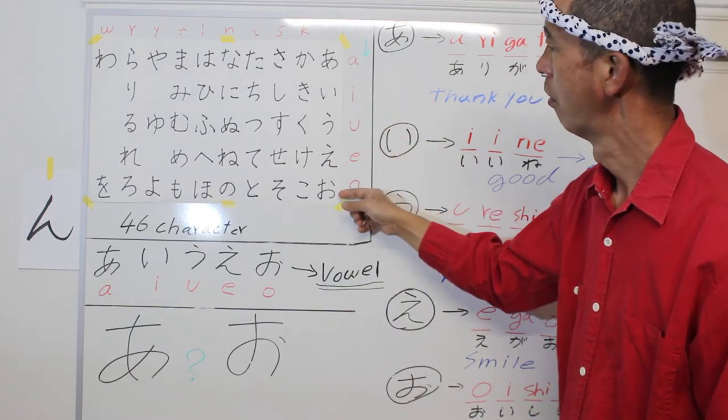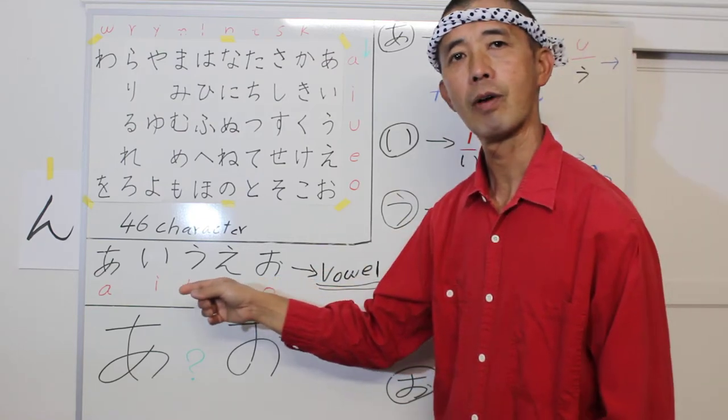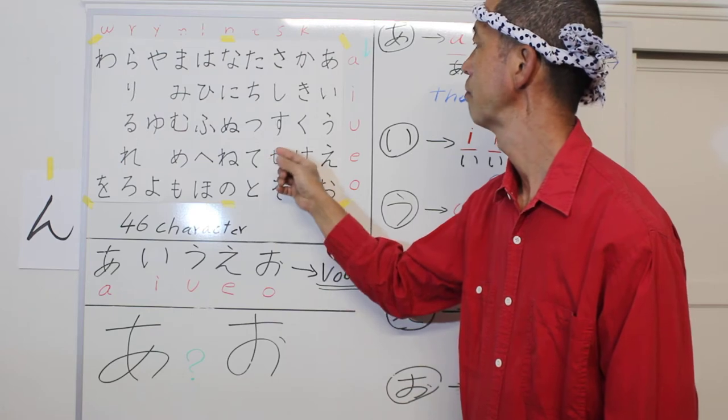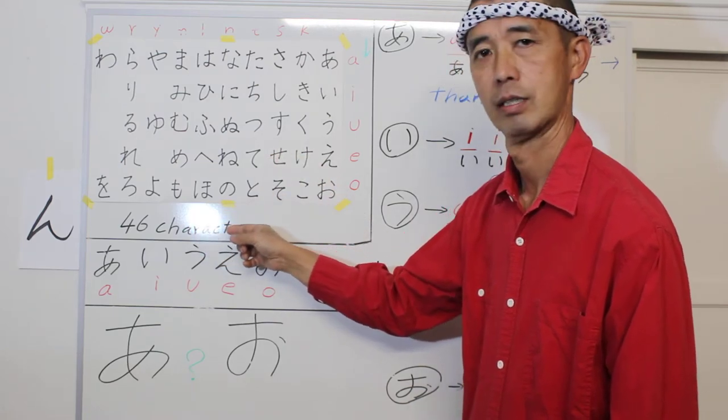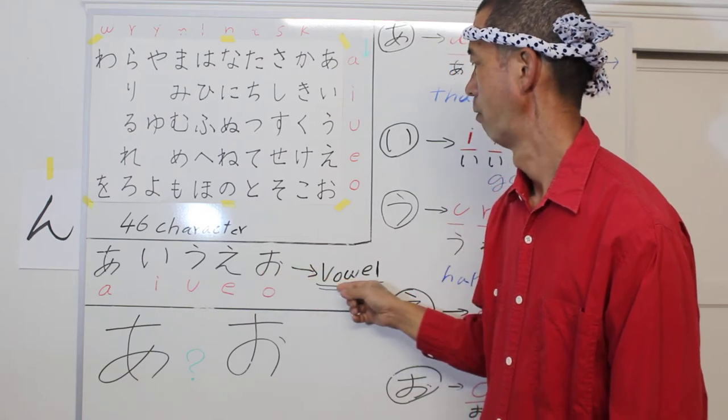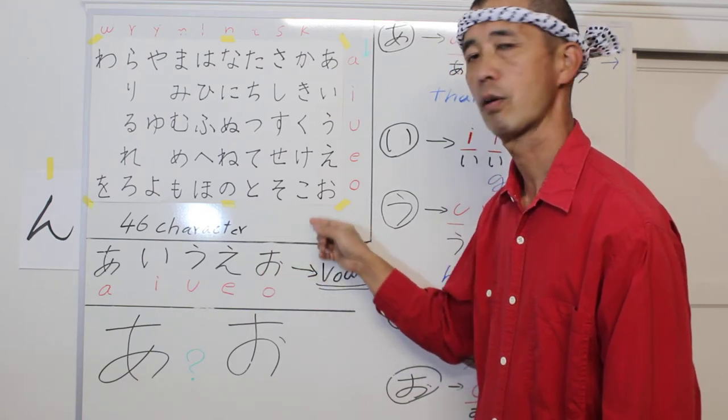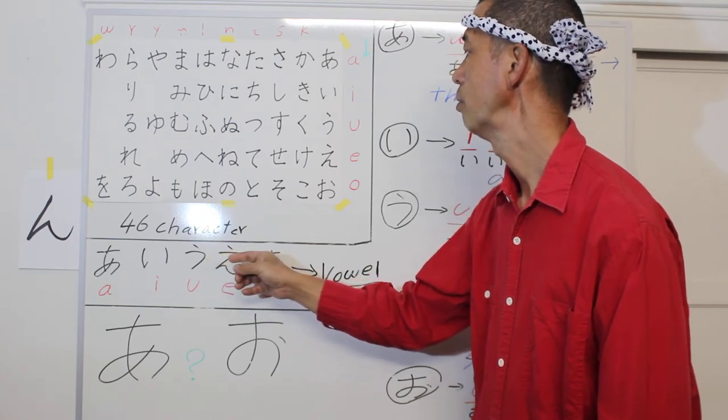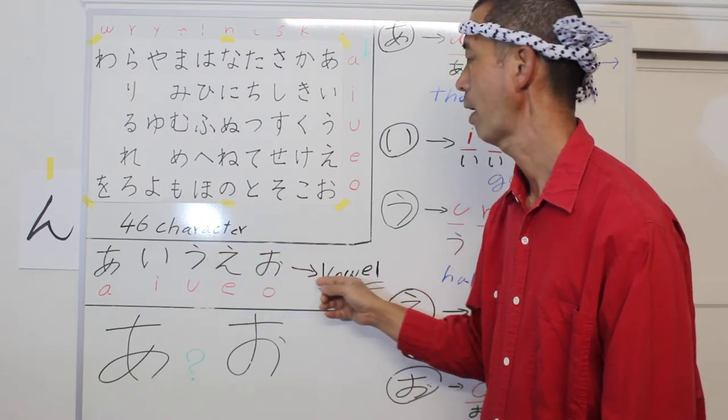AIUEO. AIUEO is the first sentence. Japanese characters have 46 characters. AIUEO are the vowels. They are very important.